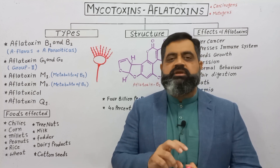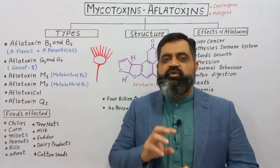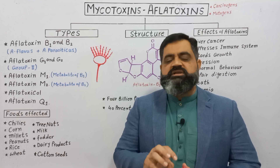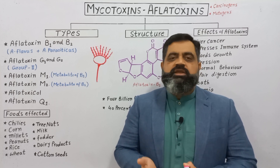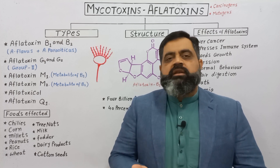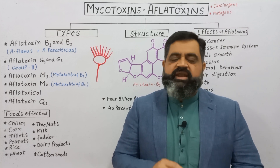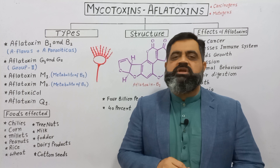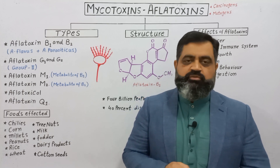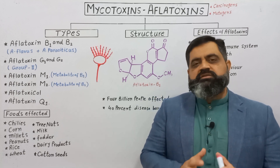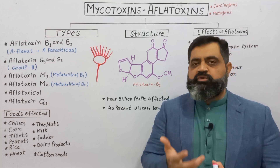If improperly stored, these grains and foodstuffs become contaminated. When these grains, seeds, and food are consumed by animals or human beings — directly or indirectly — they can take in aflatoxins from these foodstuffs. Once aflatoxins enter inside the body, they can harm the body and produce different types of diseases.